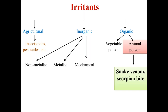This is the old classification which we are looking at on the screens. Poisons are grossly divided into four types: corrosives, irritants, systemic poisons, and miscellaneous poisons. Corrosives we have dealt with, and irritants we are dealing with now — divided into organic and inorganic irritants. Organic irritants are again divided into three types: metallic, non-metallic, and mechanical irritants.